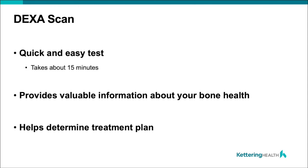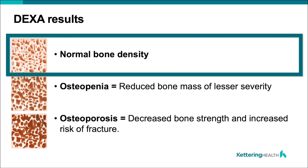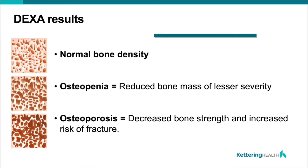When you get your DEXA scan results, it will indicate one of three things. Normal bone mineral density means a T-score greater than negative 1.0 — for example, a T-score of 2 indicates normal bone mineral density. If you have normal bone mineral density, we recommend you continue making those healthy lifestyle choices to maintain it, including vitamin D and calcium supplementation.